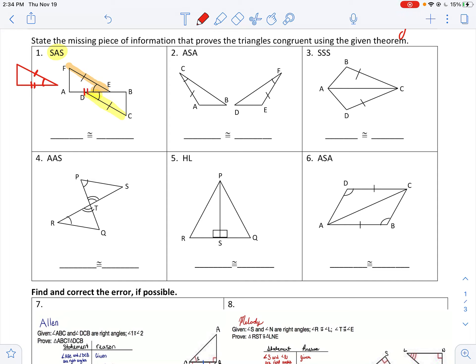So that's down here. That's AE. AE. So AE is the missing piece for side-angle-side in that triangle.